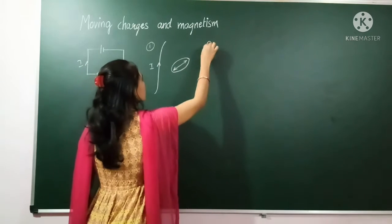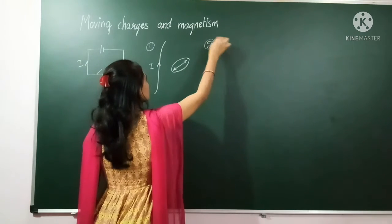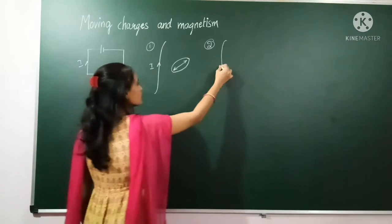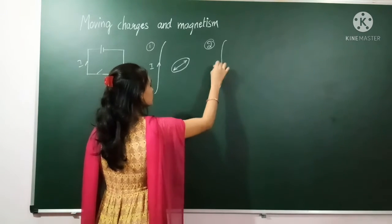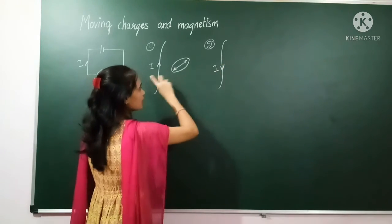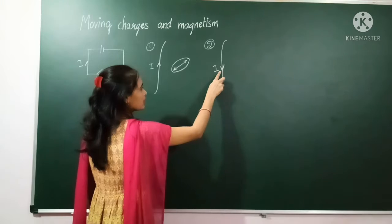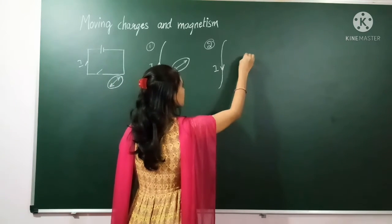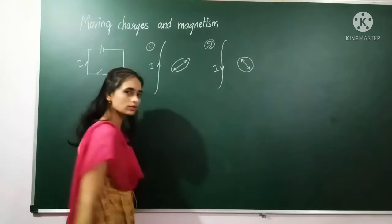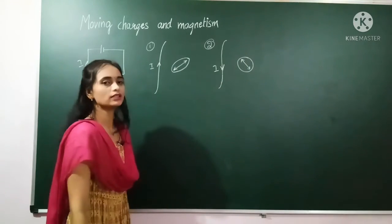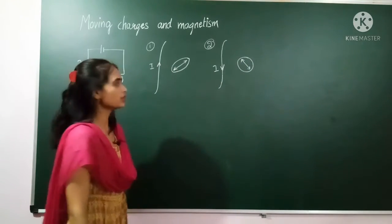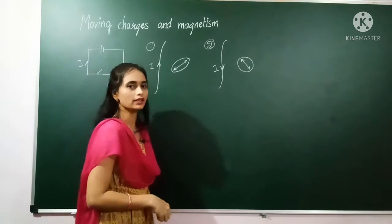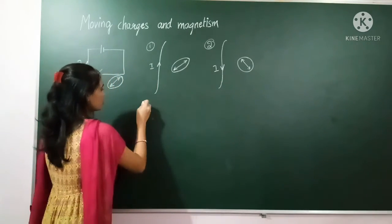For the second observation, we took the same wire but changed the direction of the current — the direction of current has been reversed. What we observed is that the deflection of the magnetic needle is also reversed. So we can conclude that this deflection is totally dependent on the direction of the current. This is our second observation.